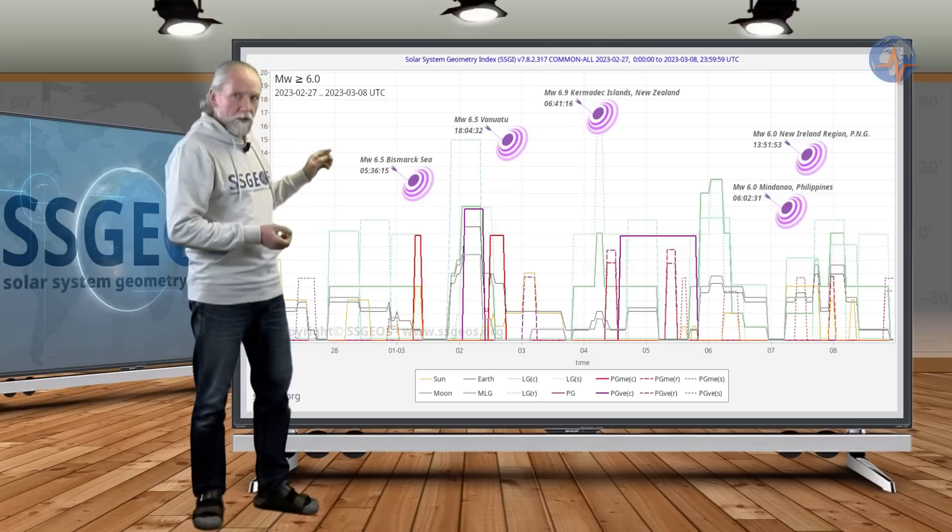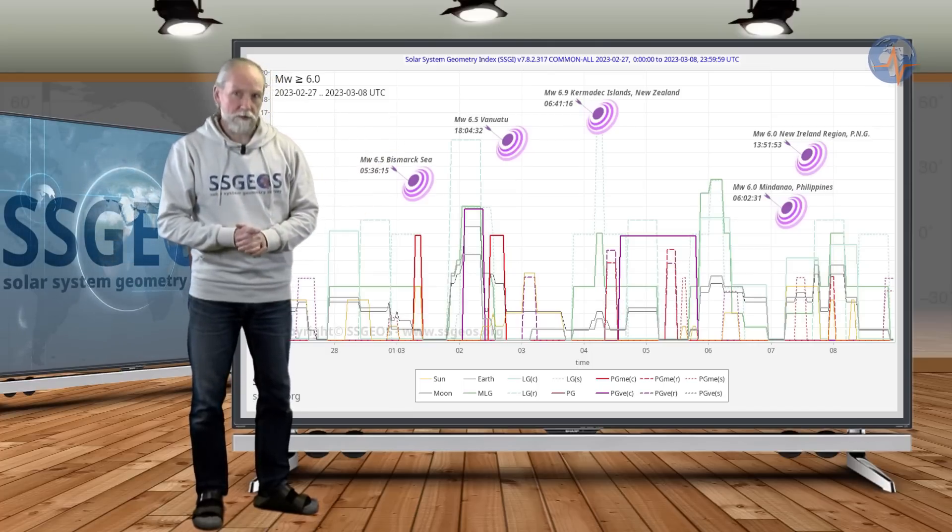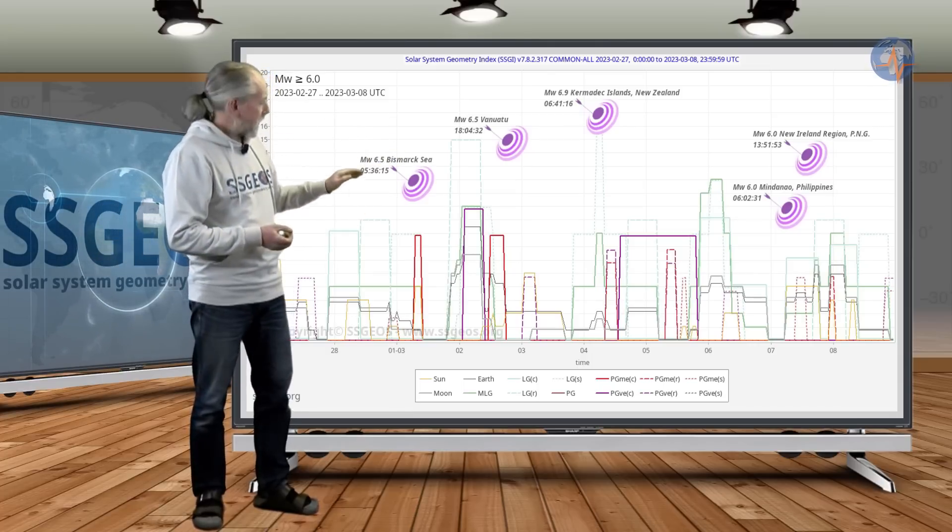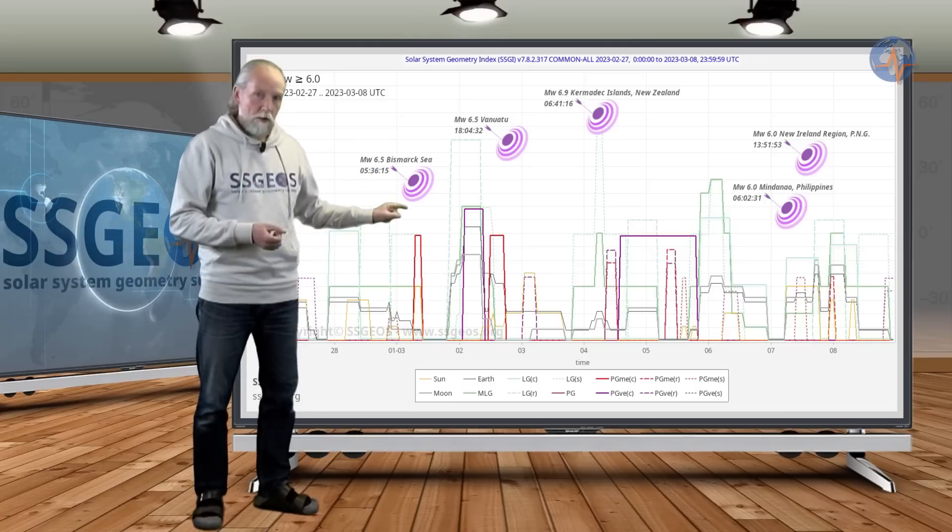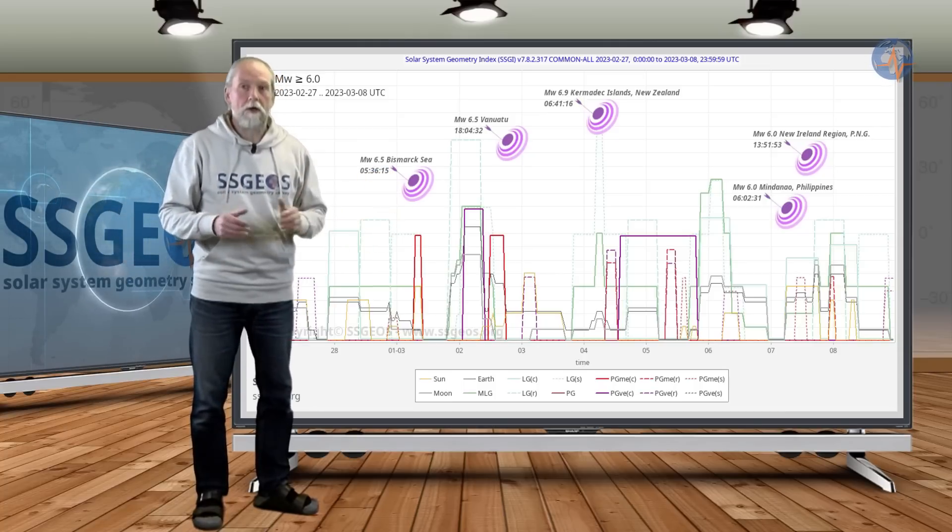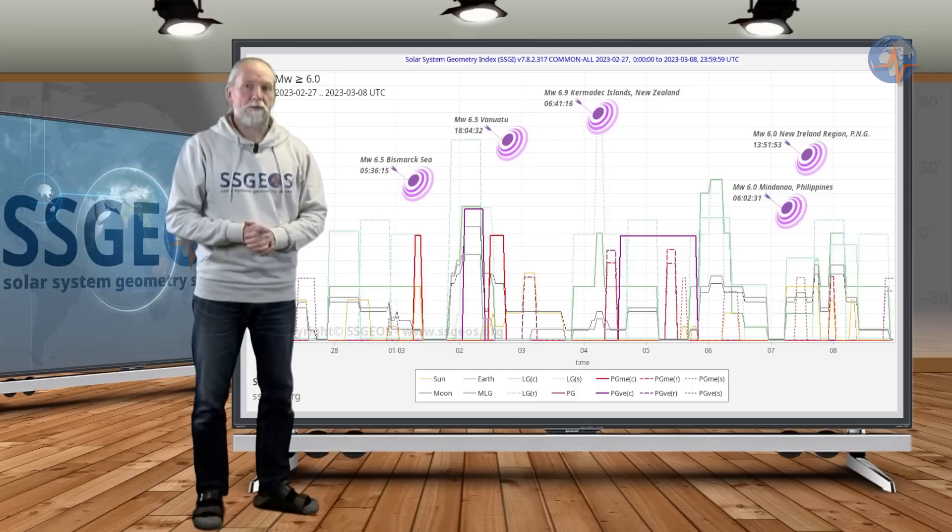These strong earthquakes from the first to the fourth is the strongest clustering so far, and as you can see it matches the critical geometry around the second. Fortunately, so far no major or great seismic event.